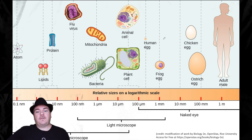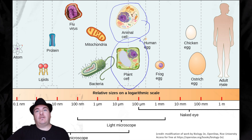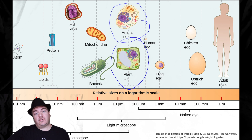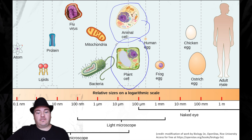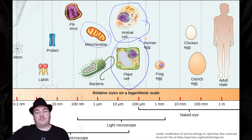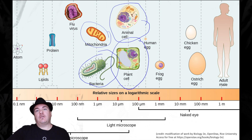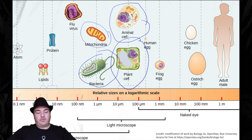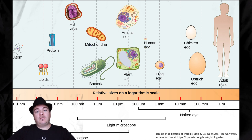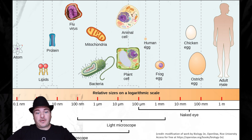With a light microscope, you can very easily see things like animal cells and plant cells, which are eukaryotic cells — something we'll discuss in a few minutes. You can also see some things inside cells, like the nucleus, which is very easy to see, or the mitochondria. You can also see different types of cells, for example bacteria, which are a prokaryotic cell. Bacteria are very small, but you can see them with a light microscope.